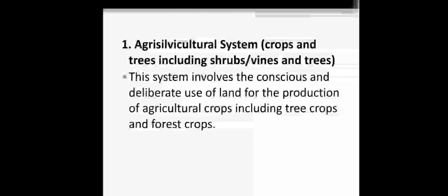The first one is the agro-silvicultural system. It includes crops and trees — what kind of trees? Shrubs, vines, and trees. This system involves the conscious and deliberate use of land for the production of agricultural crops including tree crops and forest crops.